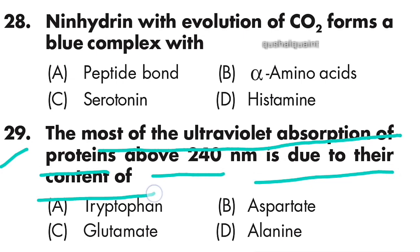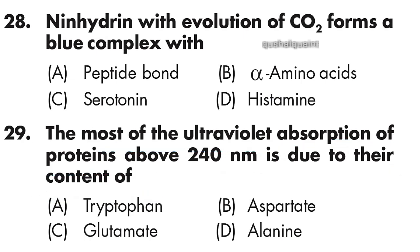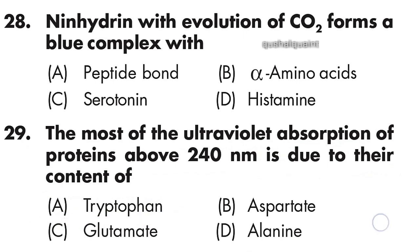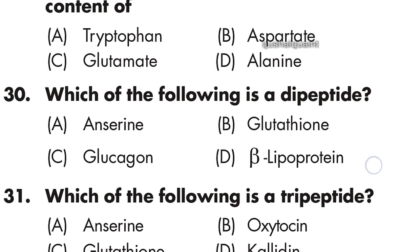Question 29: Most of the ultraviolet absorption of protein above 280 nm is due to their content of — option A is right — tryptophan.